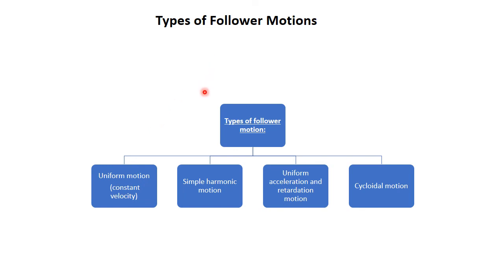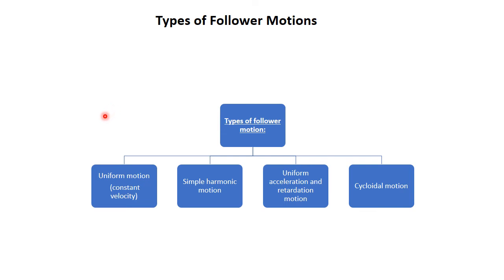Now we are going to see the types of follower motions. Whenever a cam reciprocates or rotates, the follower follows some specific motion. For example, the engine valves are suddenly closed or opened at the end of one stroke and the start of another, and in between the valve is kept at rest. So the follower always has some specific motion pattern.